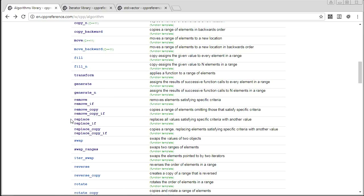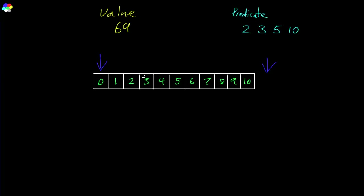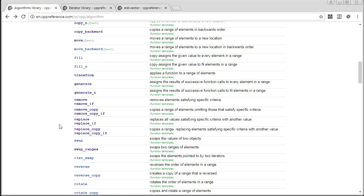replace and replace_if work differently — instead of reshuffling and returning an iterator to the new end, they run over the entire range and anything that matches the predicate gets replaced by a value you give the algorithm. So if you pass it 69 as the replacement value along with the range and predicate, it will replace the matching elements with 69. It could come in handy, though I don't use it that often.